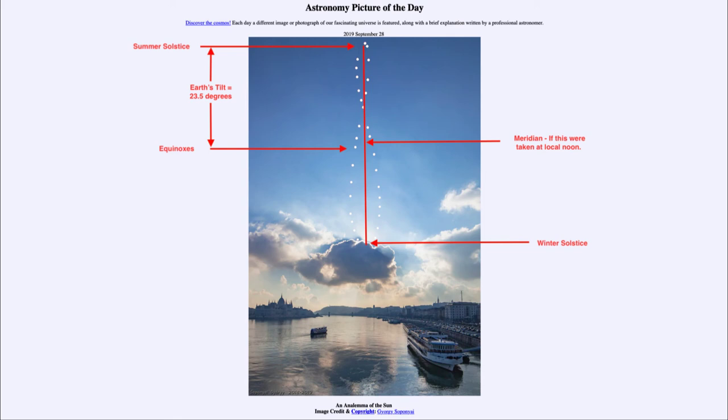But here we get to see the actual motion of the sun, where the sun would be at the exact same time each day from the same location. And the pattern that forms is what we call the analemma.